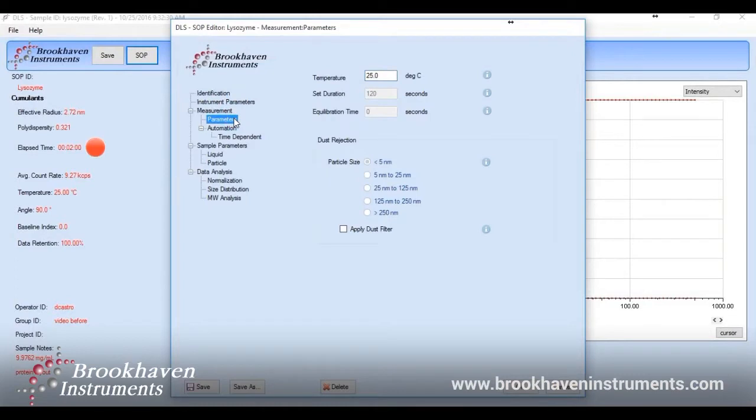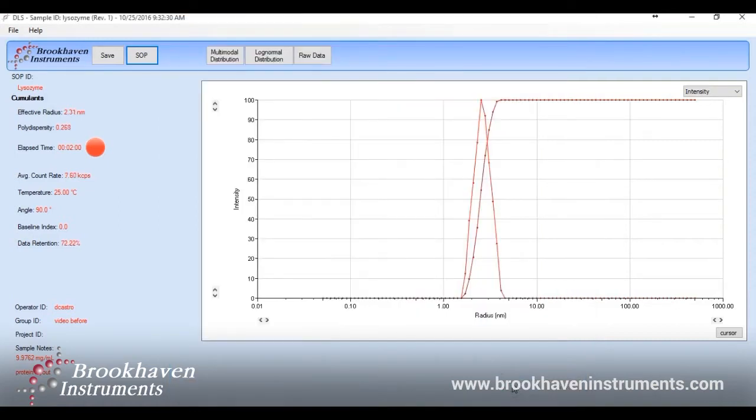under parameters, you'll see we have a dust filter setting, which can be turned on and off, and you can choose the appropriate setting based on the expected size of your sample. If less than 5 nanometers is chosen and the filter is turned on, some of those fluctuations from dust will be eliminated to allow for the desired particle size to be measured.